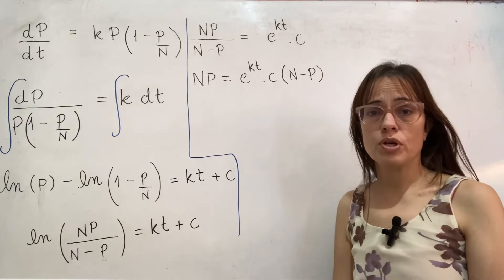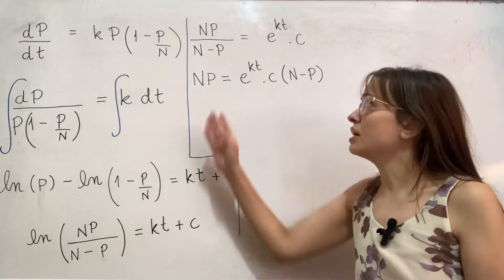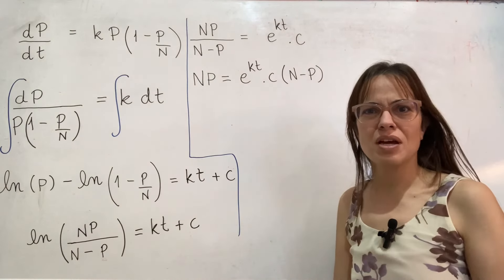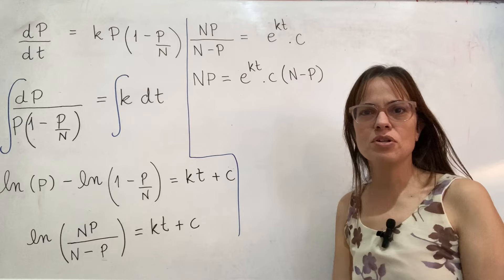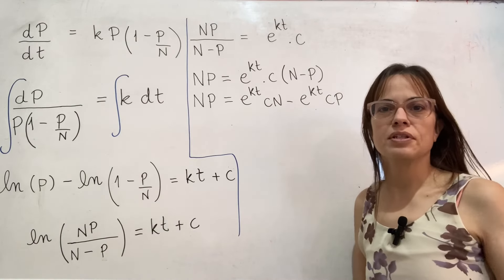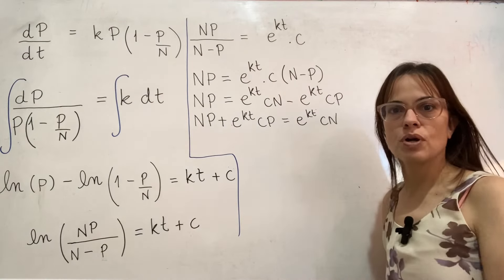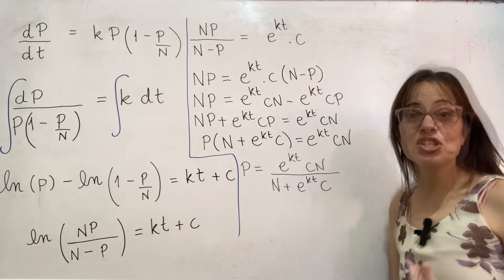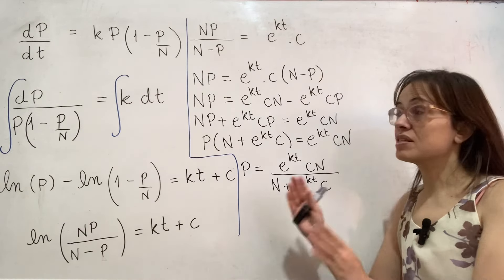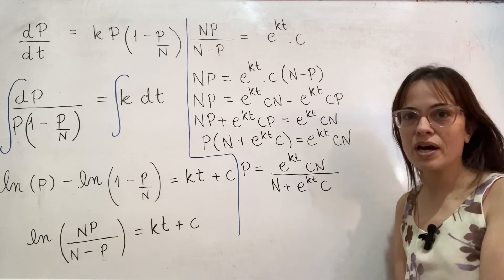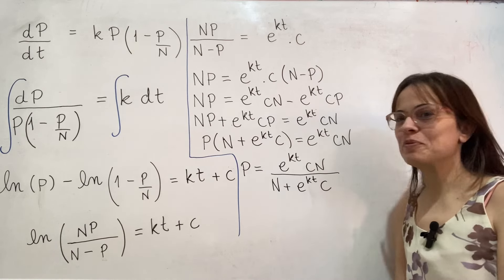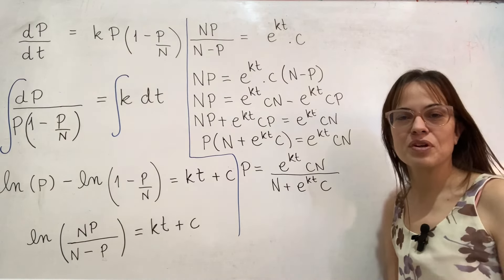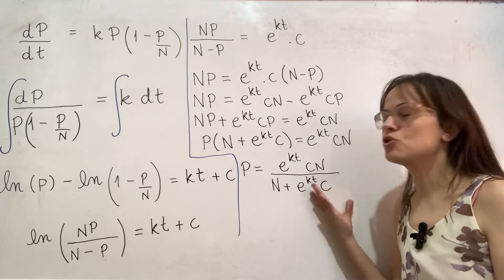Moving on with the solution, I have the variable I'm trying to isolate in both sides of a fraction. I multiply both sides by the denominator, apply the distributive property, put the p's together, factor out the p, and divide both sides by what's multiplying p. It's not a coincidence that this specific equation has appeared twice in the small sample of past papers we have.